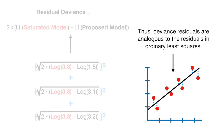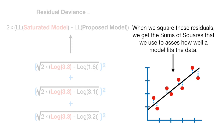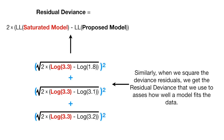The deviance residuals are analogous to the residuals in ordinary least squares. When we square those residuals, we get the sums of squares that we use to assess how well the model fits the data. Similarly, when we square the deviance residuals, we get the residual deviance that we use to assess how well a model fits the data.